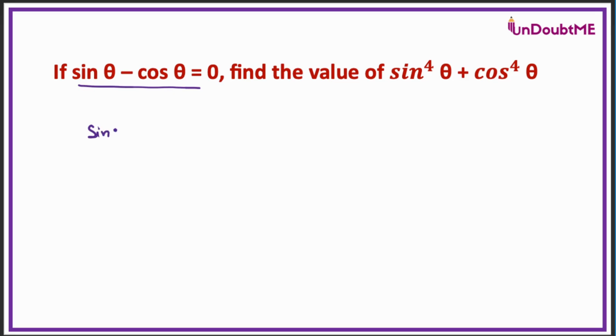So I can write this thing as sin θ equals cos θ. Dividing both sides by cos will give me sin by cos equal to 1. This is a point where mostly students write 0. It will be 1 because cos by cos will be 1.